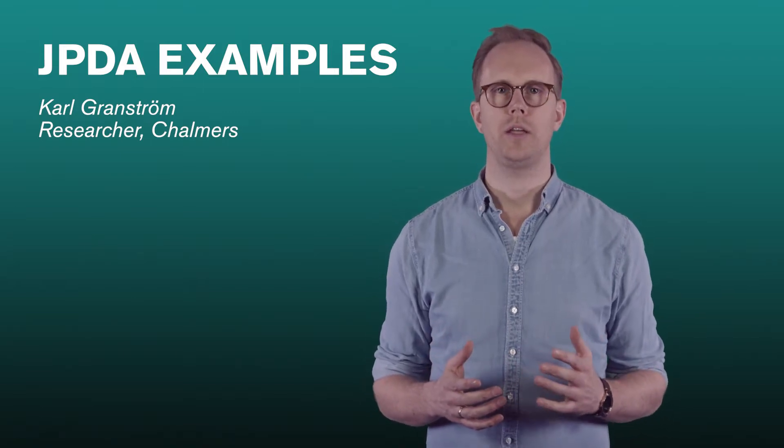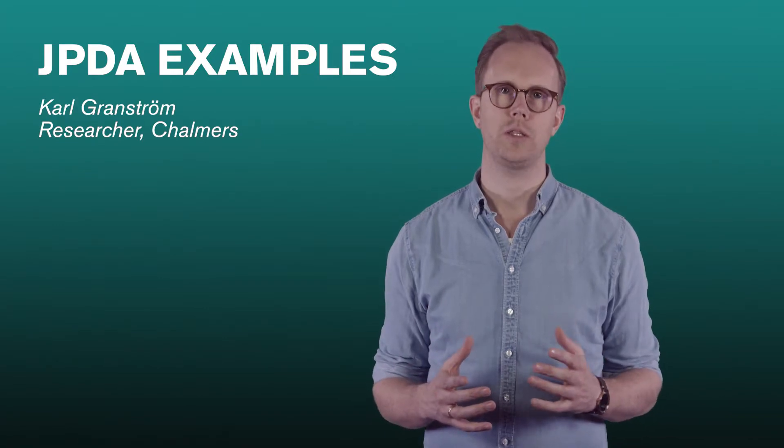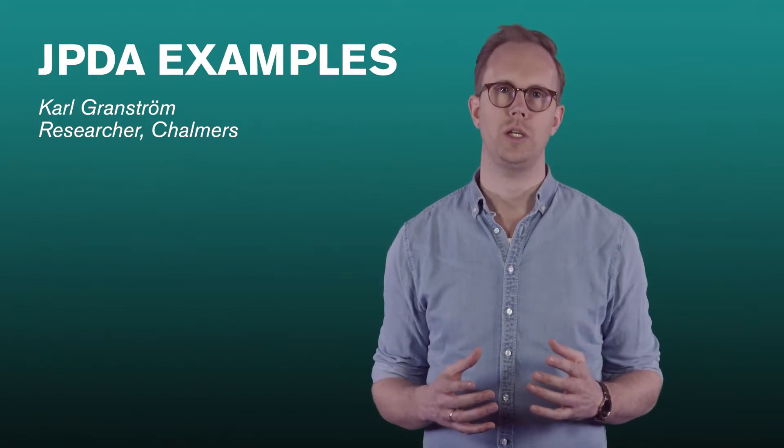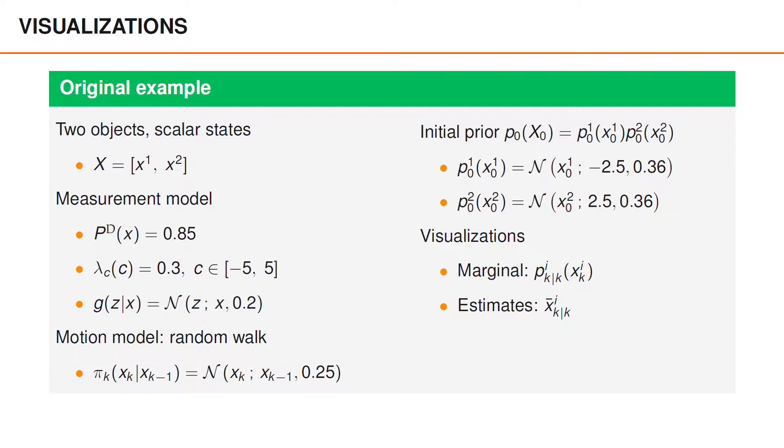That was the joint probabilistic data association filter, which is based on merging multiple hypotheses using marginal association probabilities. Let's consider the same example as we did for GNN. We have two objects with scalar states, the same measurement model, motion model, and initial prior as we had in the GNN example.